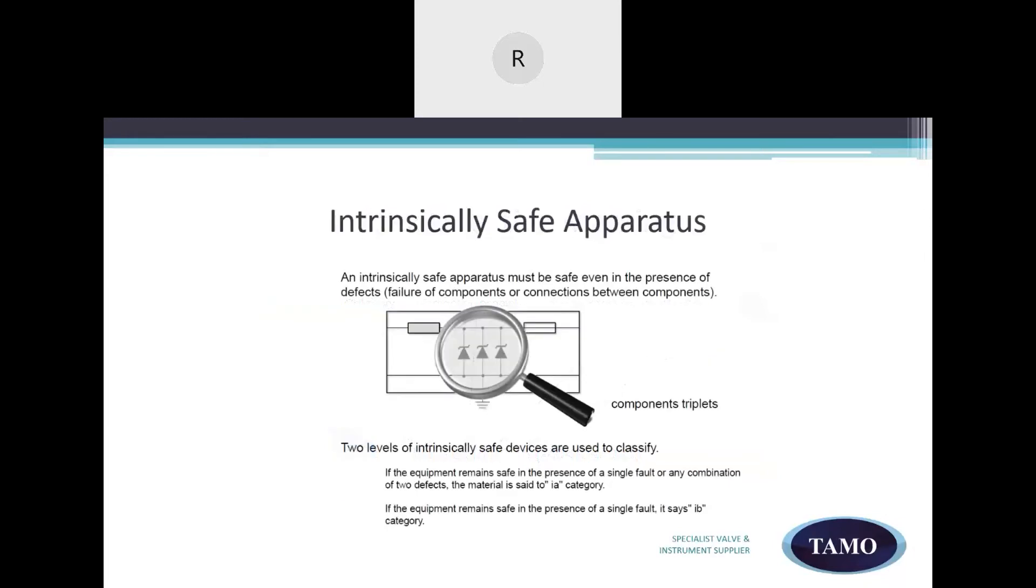The intrinsically safe apparatus. An apparatus must be safe even in the presence of defects or failure of components or connections between components. Two levels of intrinsic safety devices are used to classify. If the equipment remains safe in the presence of a single fault or any combination of two defects, the material is said to be ATEX IA category. If the equipment remains safe in the presence of a single fault, it is classed as ATEX IB category.